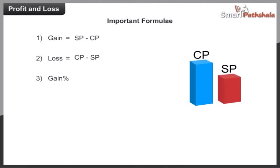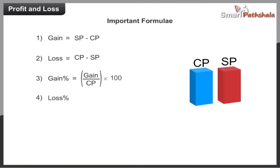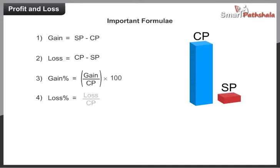3. Gain percent is equal to gain divided by CP, into 100. 4. Loss percent is equal to loss divided by CP, into 100.